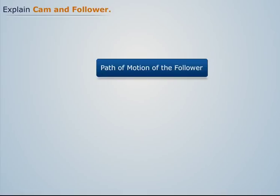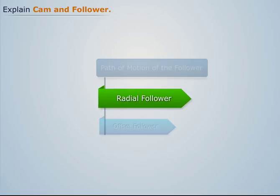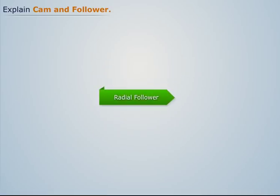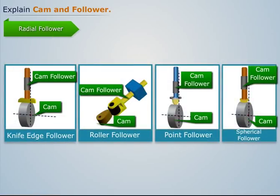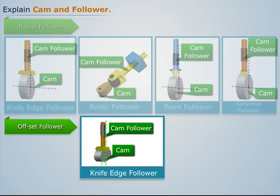On the basis of path of motion of the follower, followers can be classified as radial follower and offset follower. When the path of motion of the follower is along the axis passing through the center of the cam, it is called a radial follower. When the path of motion of the follower is along an axis away from the axis of the cam center, it is called an offset follower.